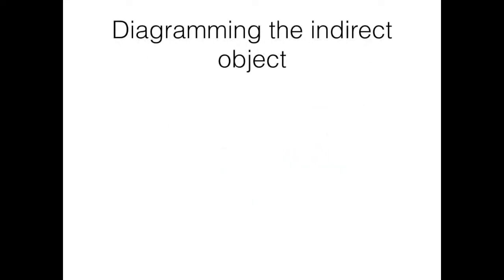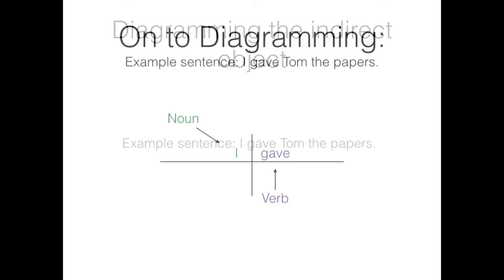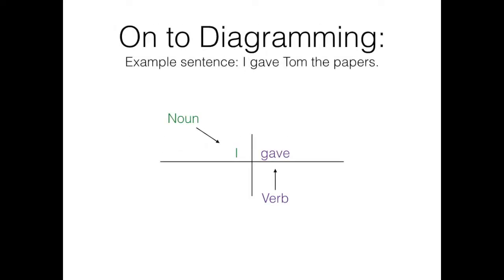Now let's look at diagramming an indirect object. An indirect object is always diagrammed with a direct object because you can't have a sentence with an indirect object that doesn't have a direct object. Our example sentence will be 'I gave Tom the papers.' We start by identifying the subject and verb, which in this case are I and gave, respectively.